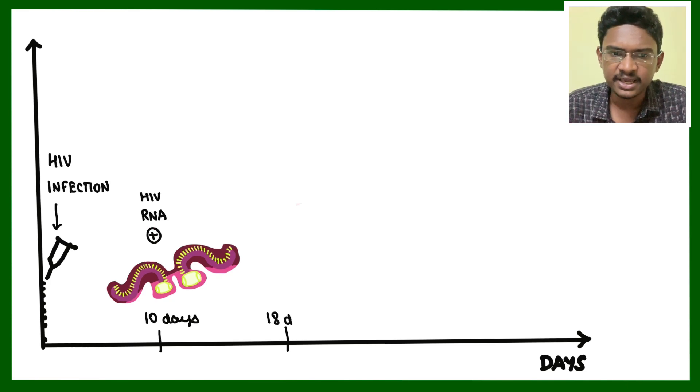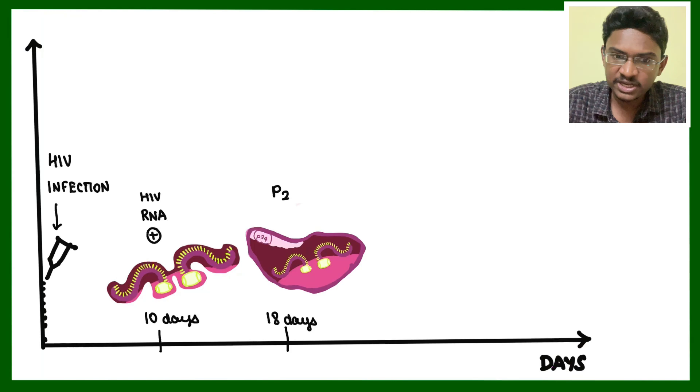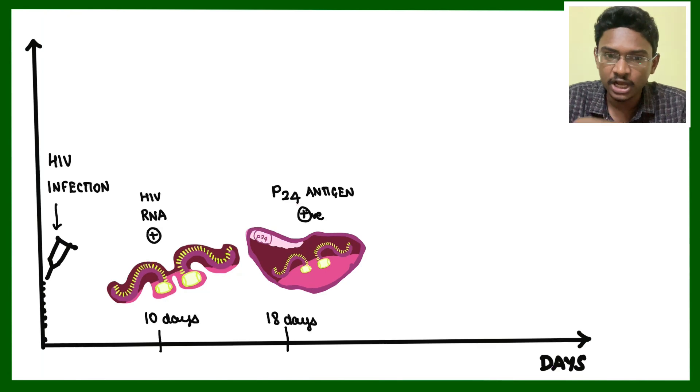After one week, on the 18th day, the p24 antigen gets released into the bloodstream. This will become positive in the third week, around the third week you will be getting this p24 antigen positivity.